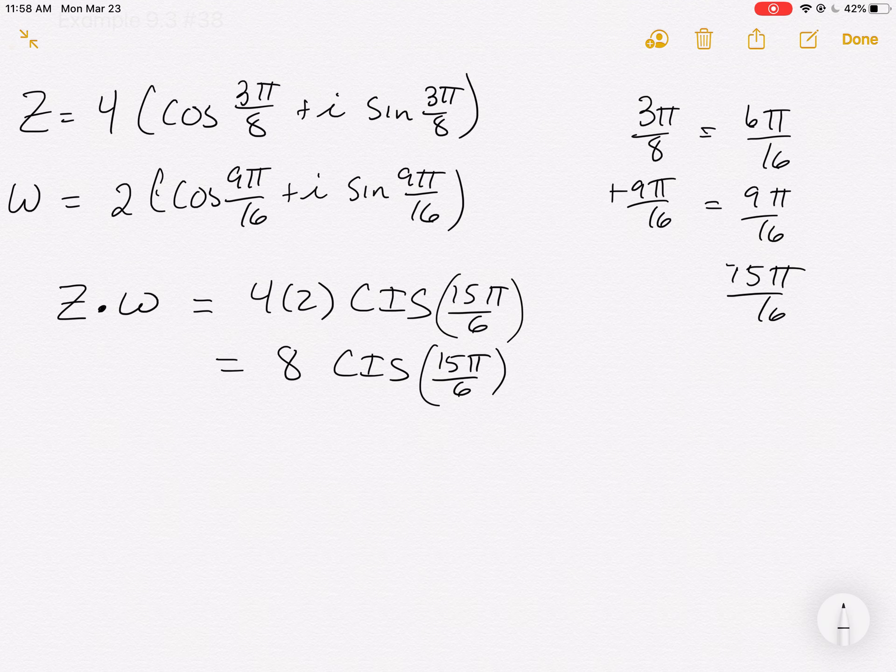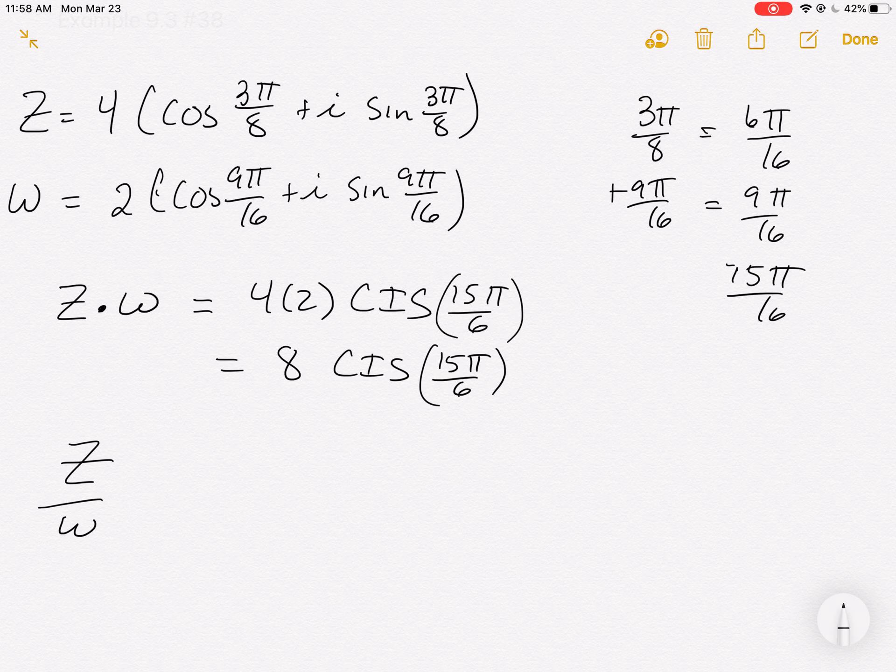Now, there is a second part. And the second part is to do the division. And that's easy. We're going to take and divide the first two numbers. So we're going to get a 2 out in front.